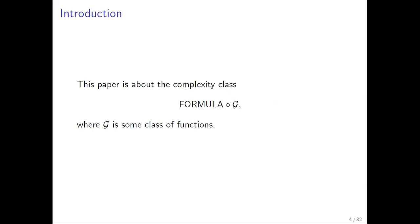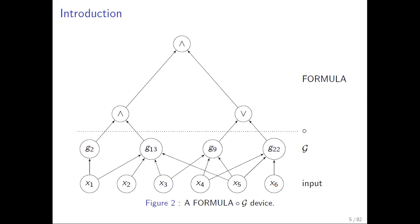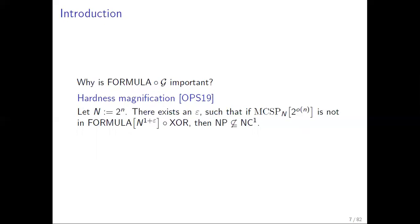Let's see how this class looks like. This circuit complexity class that we're going to study is called formula — like formulas of functions in some function class Z. On top, there is a formula, which is a circuit of AND and OR gates that has tree structure. Then there's a layer of functions from the class Z, and then there is an input layer where the input variables are. One instantiation of this function class Z is the class of parities, and we're going to see some results about this later.